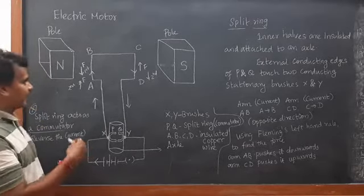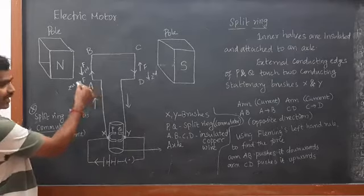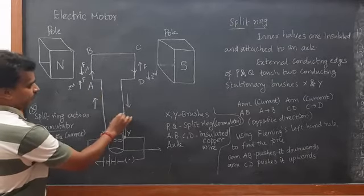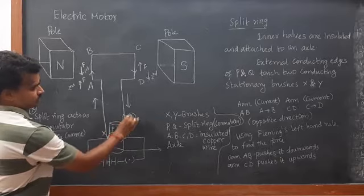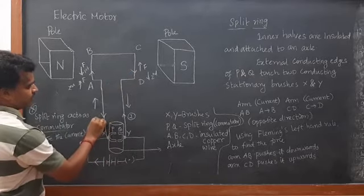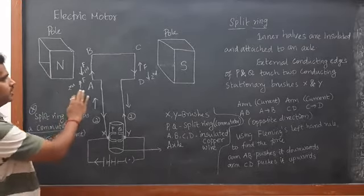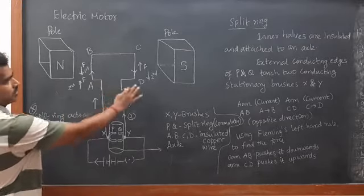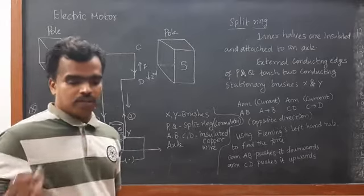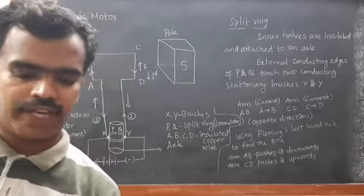Then the second part starts. In the second half of rotation, the current flows starting from Y. The force will change to the upward direction on one side and downward on the other, and it will obviously continue rotating in a single direction.